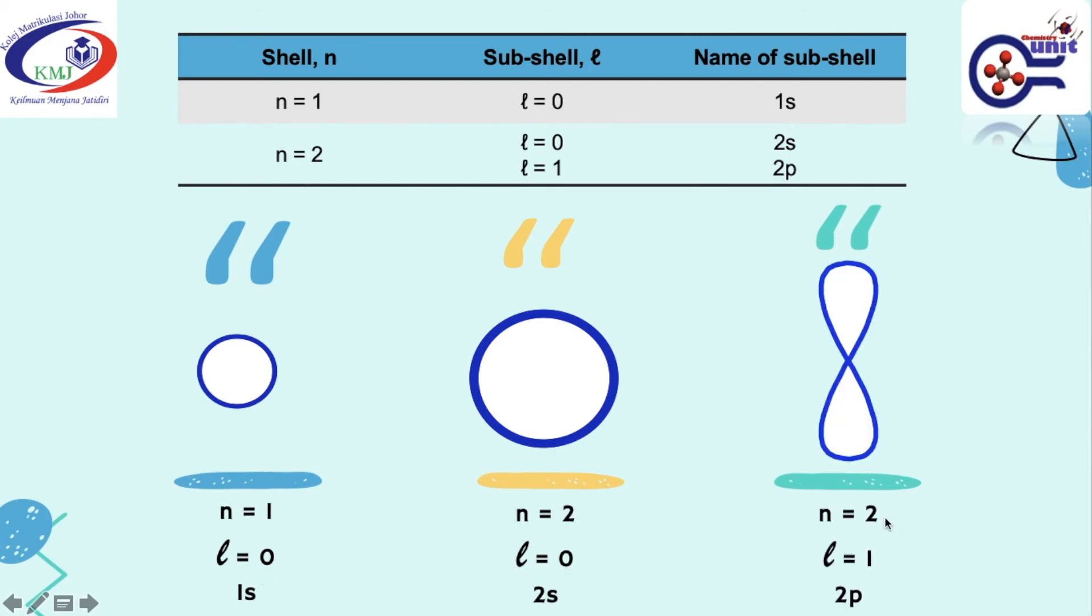When n is equal to 2, L is equal to 1, the name of the subshell is 2P. So this is the shape of the orbital.